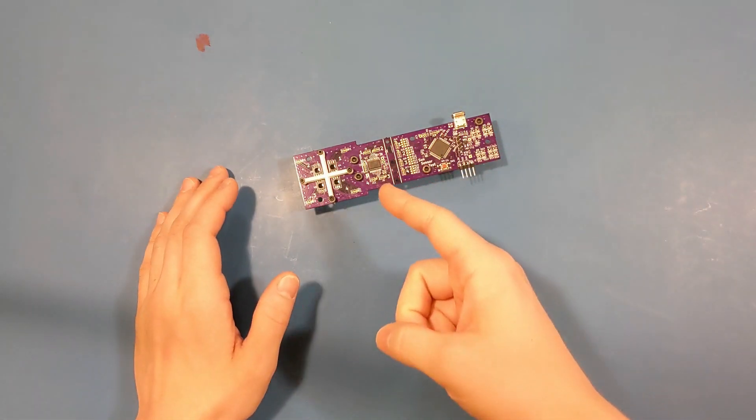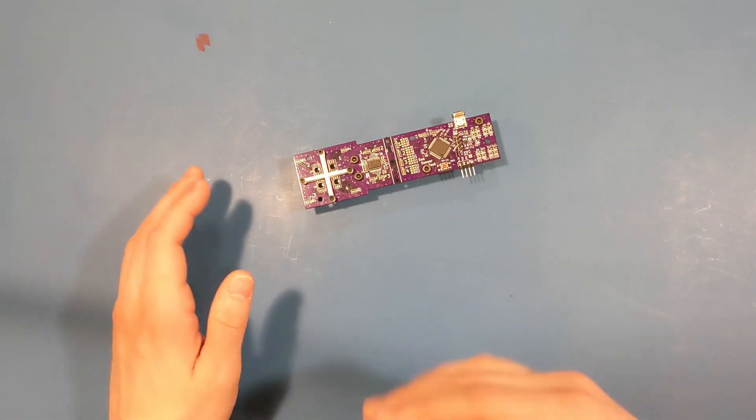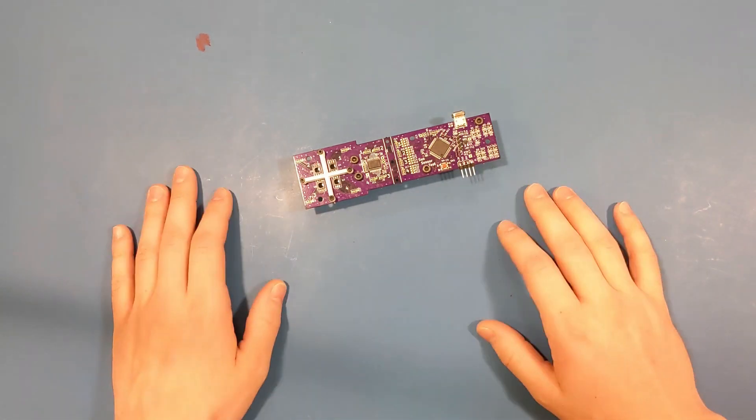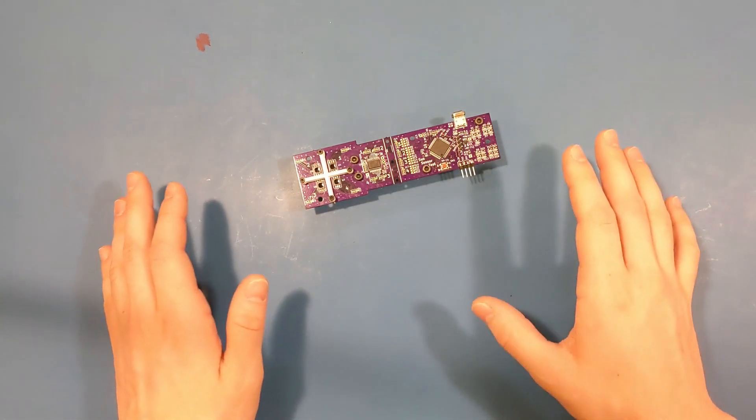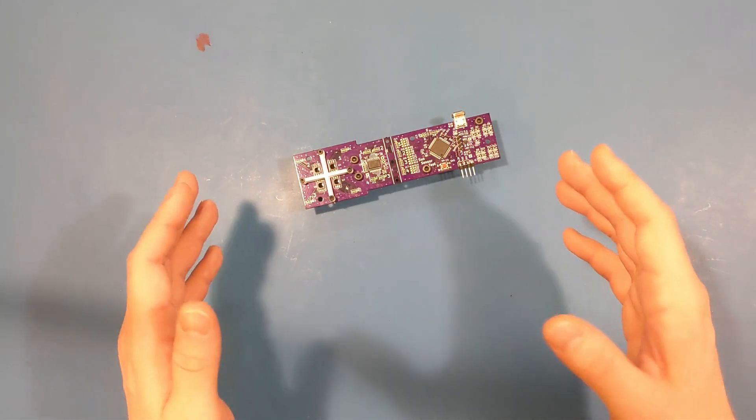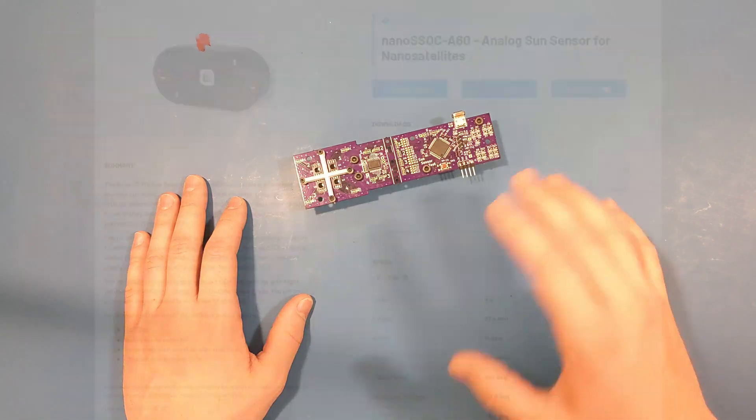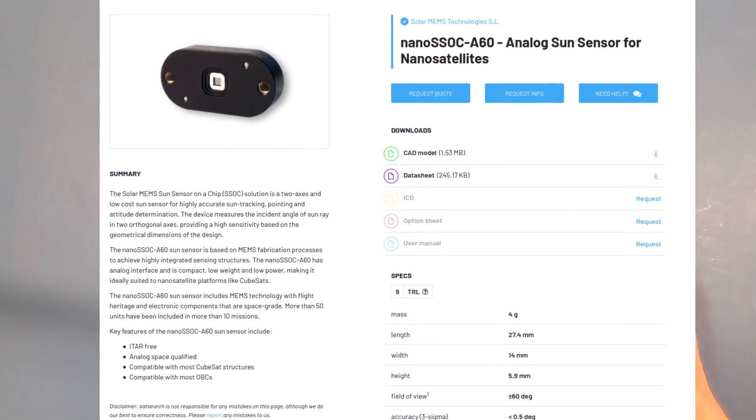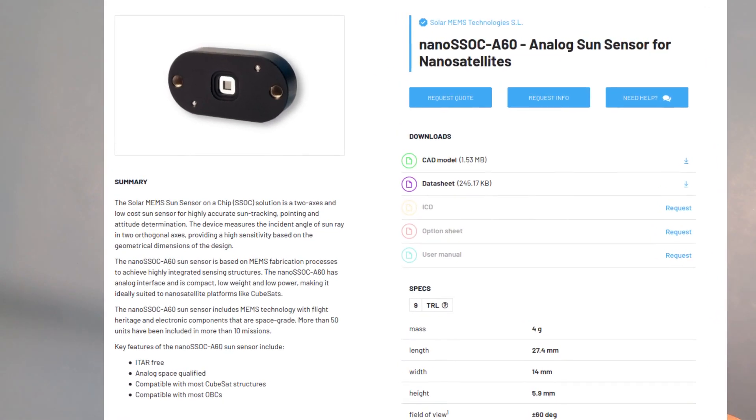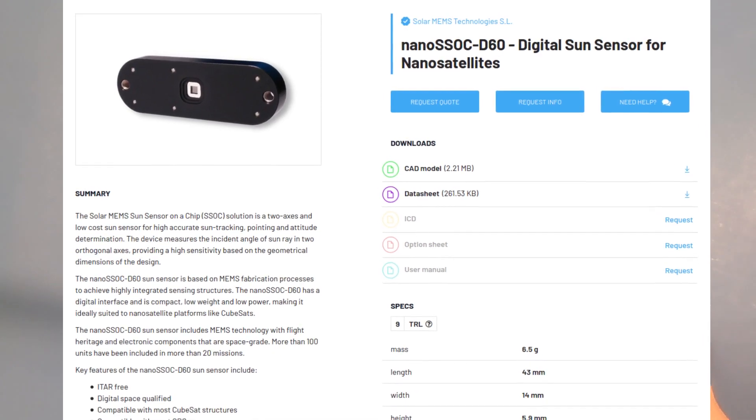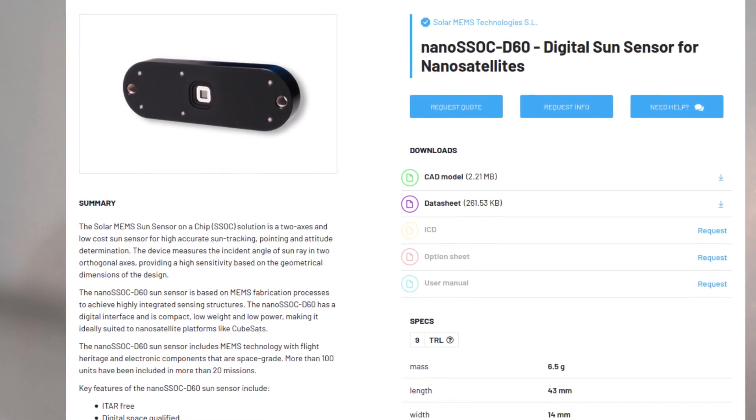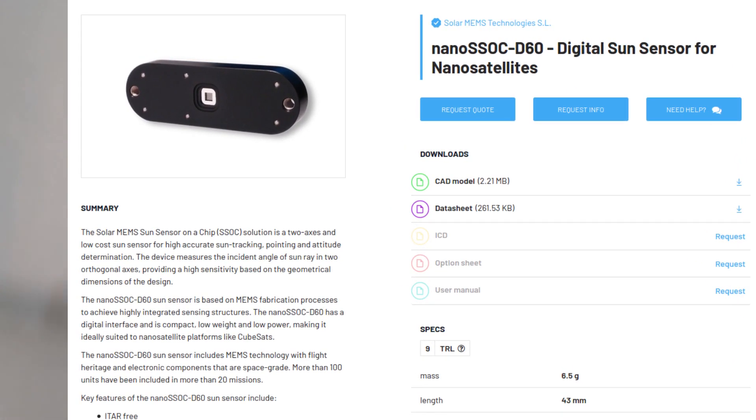The reason that I wanted to build this sun sensor was to see if I could make a cheap and accurate one. There are other sun sensors commercially available, but they all seem to be expensive. For example, I requested a quote for the Nano SSOC series of sun sensors, which are accurate to 0.5 degrees. The analog version costs over $2,000 and the digital version costs over $4,000.